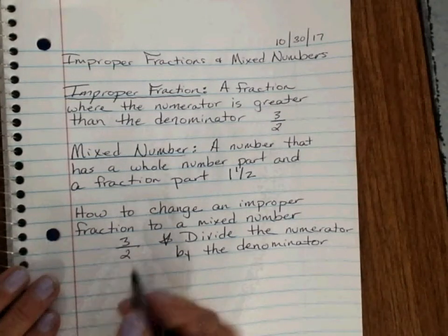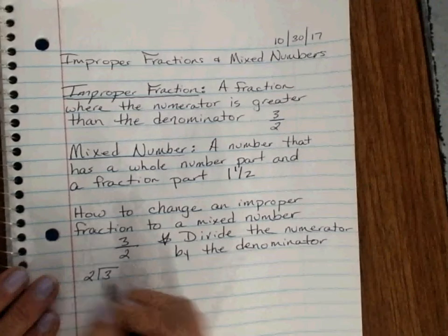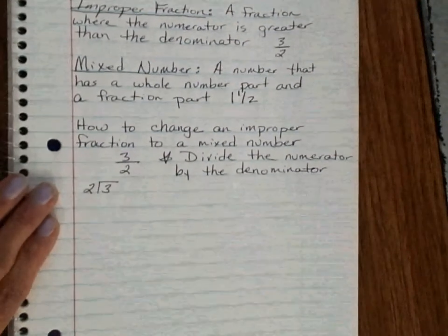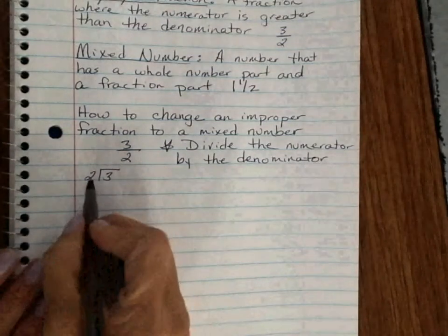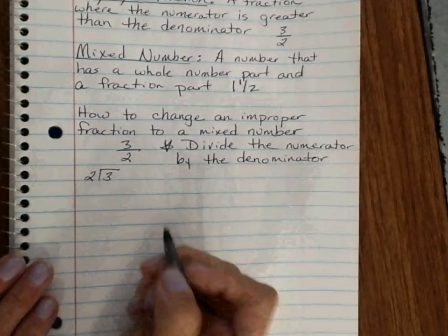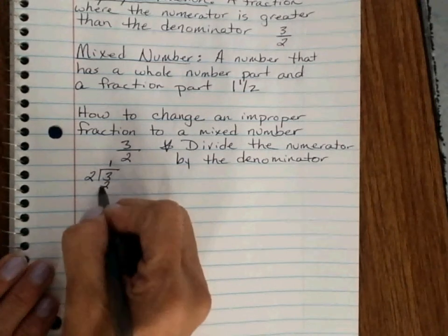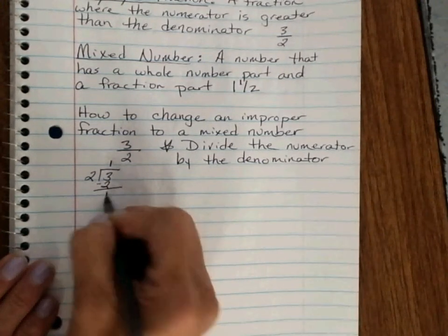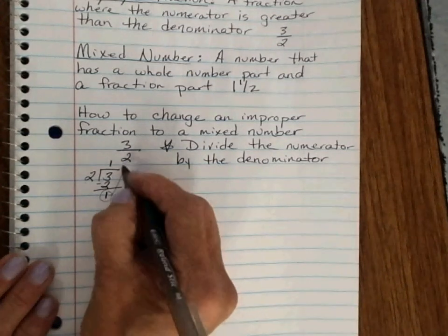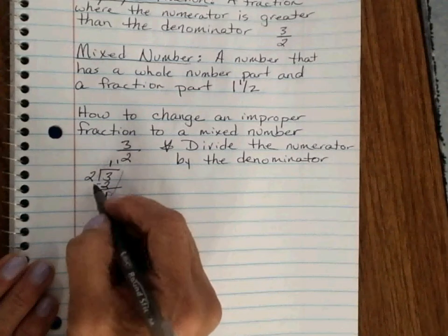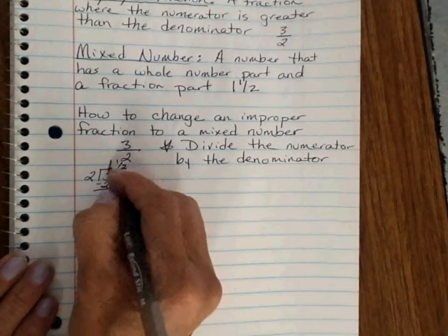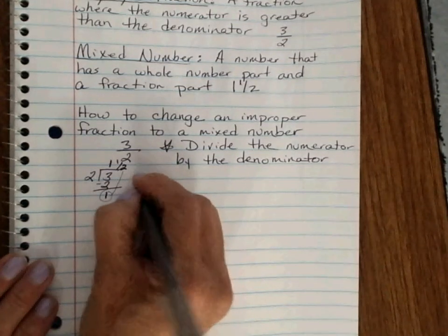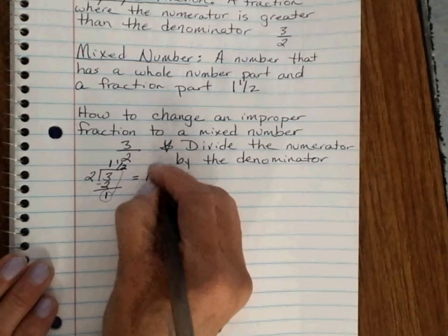We're going to divide the numerator by the denominator. So my numerator is 3 divided by 2. How many groups of 2 fit into 3? 1. And we do the regular division process. Now I'm going to subtract 1. So this 1 here becomes the numerator of the fraction. And my divisor becomes the denominator. So 3 over 2 is equal to 1 and 1 half.